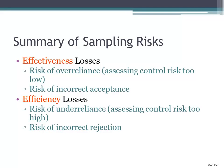Your effectiveness risk is that you over-rely — there's an over-reliance. In other words, you assess internal control risk as too low. What happens if you assess internal control risk as too low? From the audit risk model, what is that going to do to your detection risk and your audit testing?